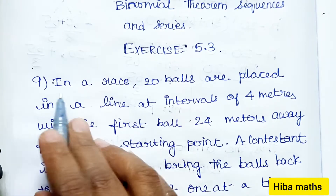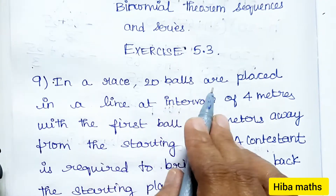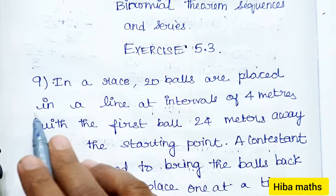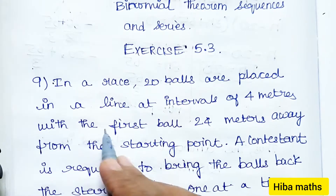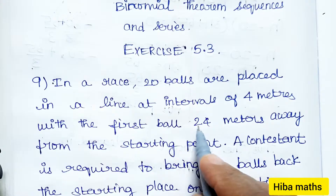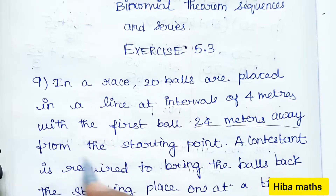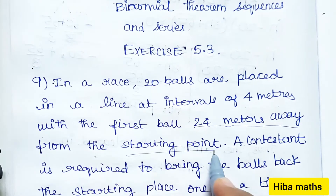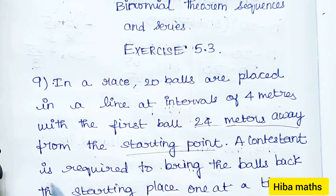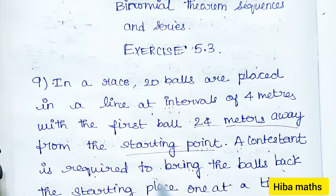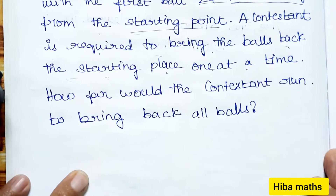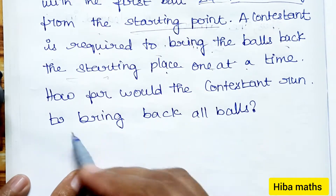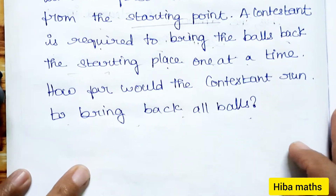Let's read the question. In a race, 20 balls are placed in a line at intervals of 4 meters, with the first ball 24 meters away from the starting point. A contestant is required to bring the balls back to the starting place one at a time. How far does the contestant run to bring back all the balls?